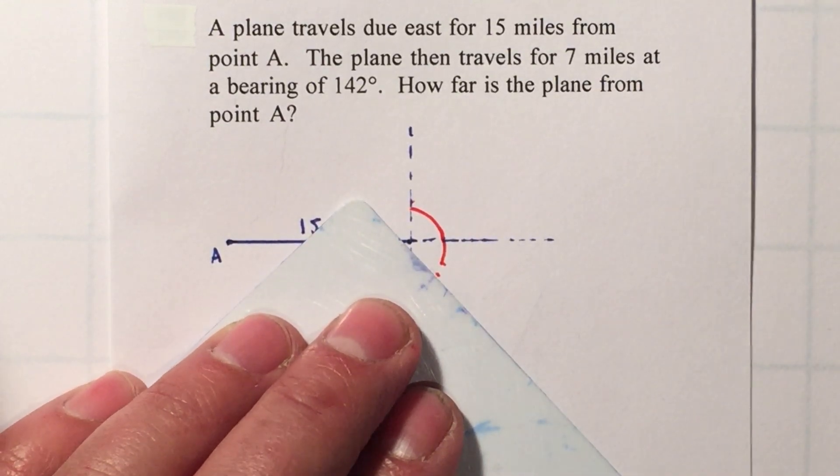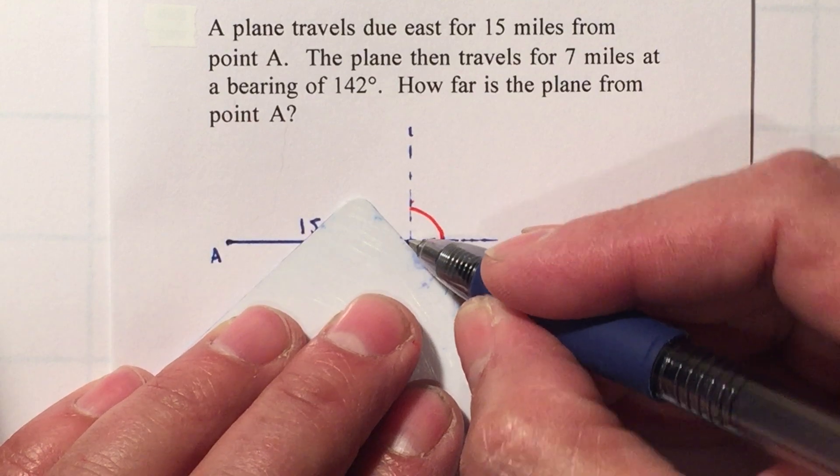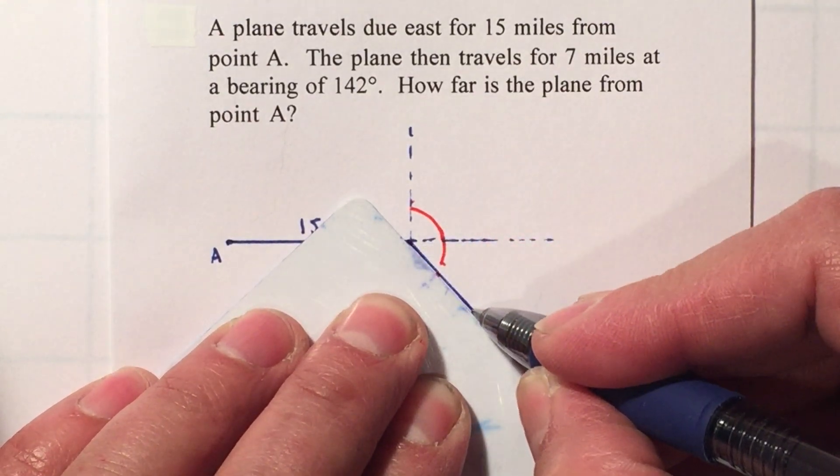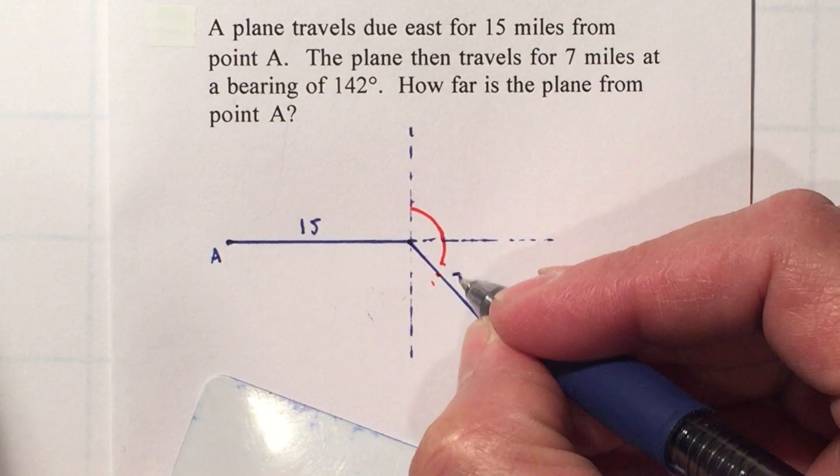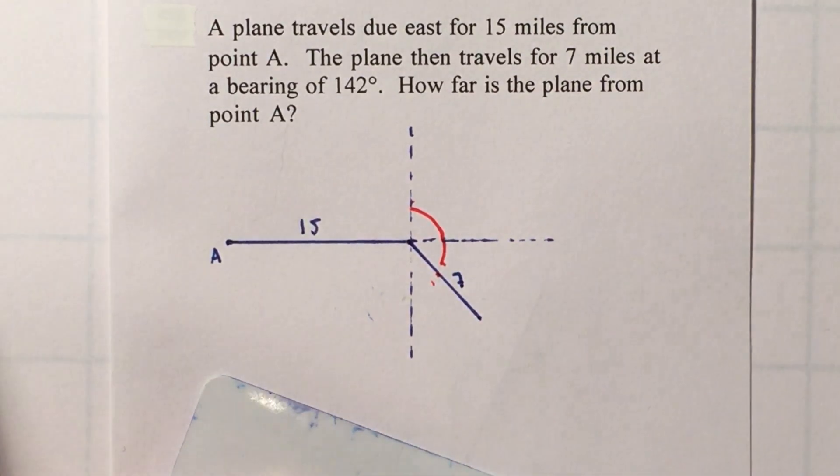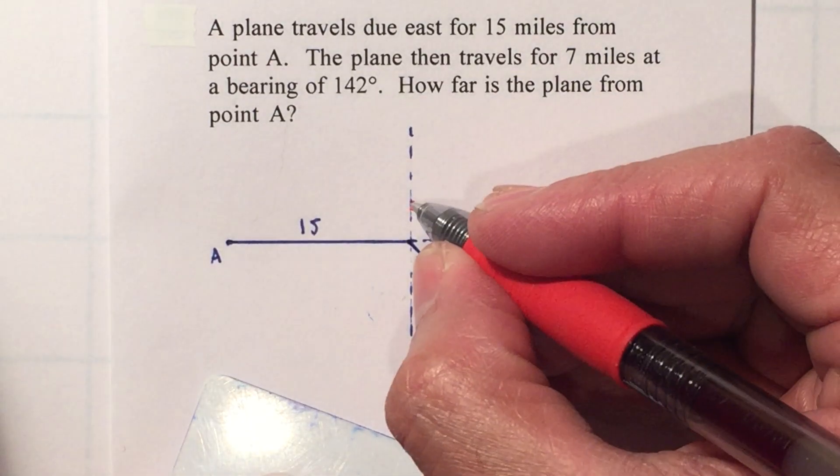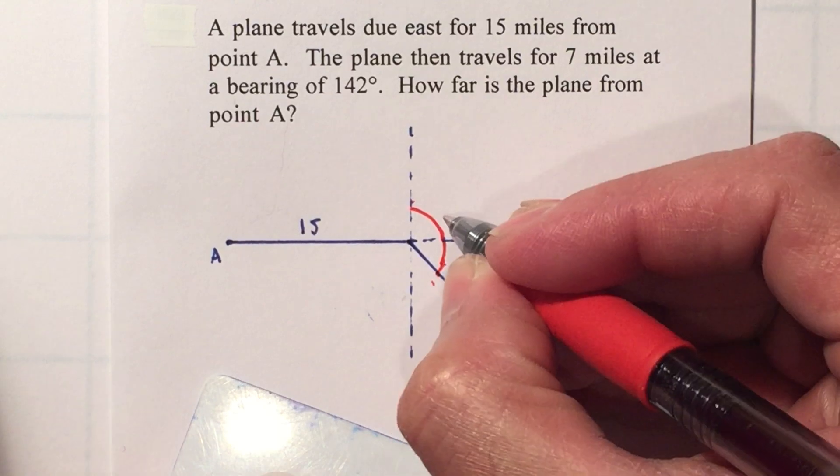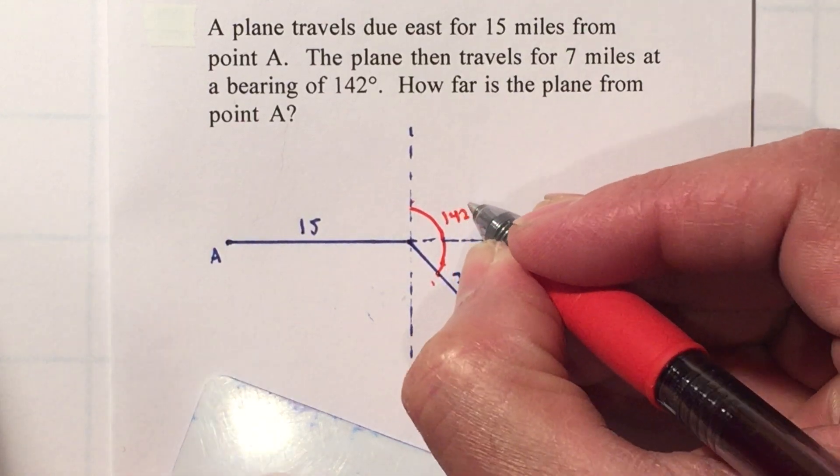This is 15 miles and you are going to travel for 7 more miles. So you want to make sure that you make an accurate sketch, so that way it'll be about half, maybe a bit more, and this will be 7 miles. This angle here, from here all the way around, will be 142°.